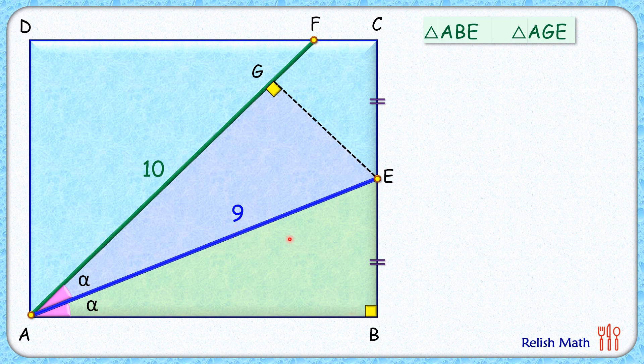Thus by angle-angle-side, both the triangles are congruent, and thus the corresponding sides are equal. Or we can say that EG is equal to EB. So this length is also equal to this length. And also this angle here, this is 90 minus alpha, and this angle here will be 90 minus alpha.